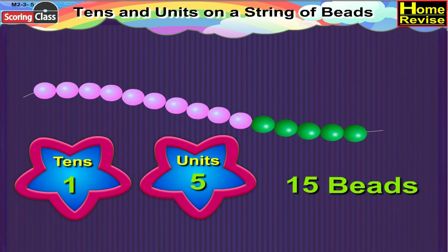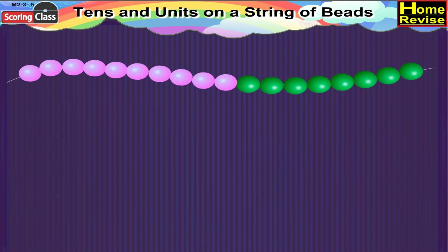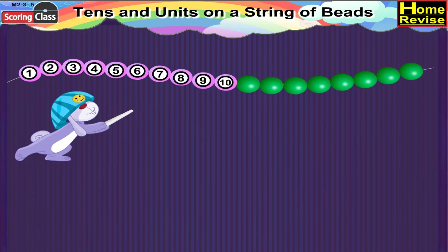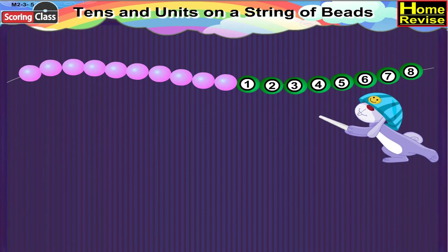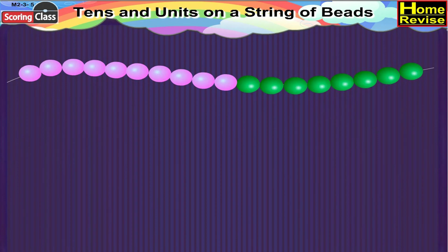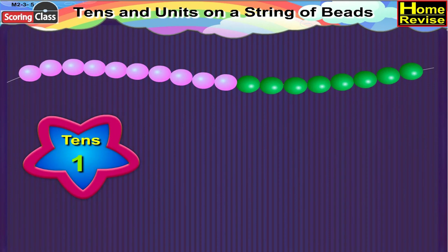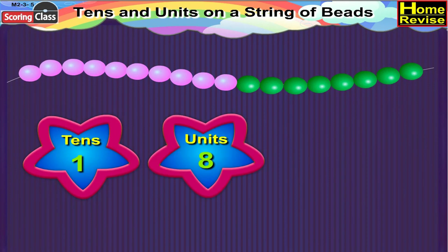In the next string, pink beads are ten in number and eight extra green beads remain. So it is one ten, eight units, or eighteen.